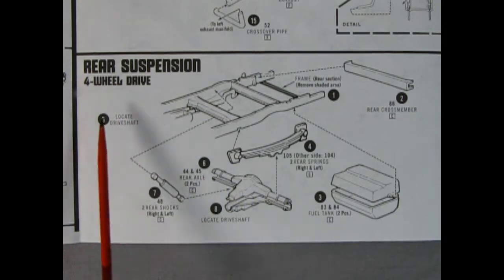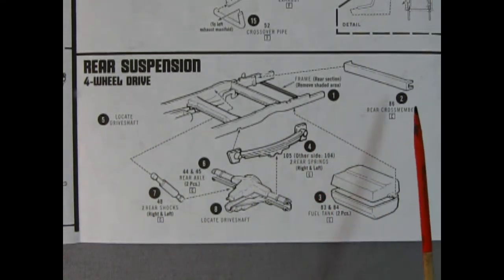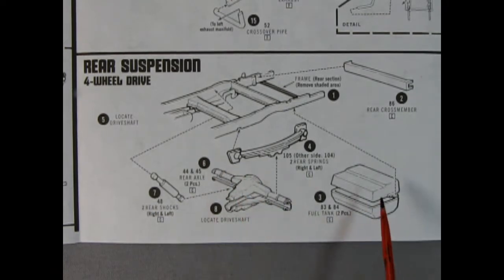Here is our rear four-wheel drive suspension which is basically a copy of the two-wheel drive. There's our brace across the back going on to the frame with our two shocks, the upper and lower rear drive shaft as well as our two leaf springs and the two piece fuel tank once again.